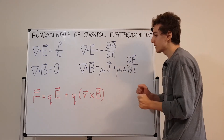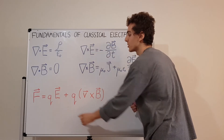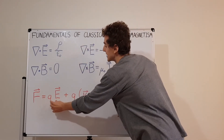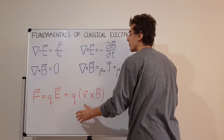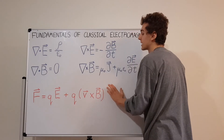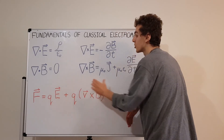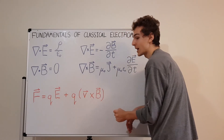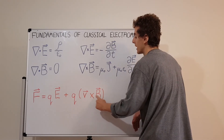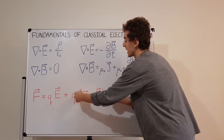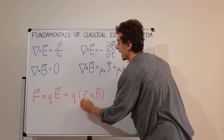The Lorentz force equation tells us how charges respond to these fields. How does a charge respond to an electric field? It's a scalar multiple by the charge giving us the force — this term is called the electric force. The magnetic contribution, called the magnetic force, also scales by the charge, but it's not a simple scalar multiplication — it's a cross product with the velocity and the magnetic field. These form a force vector when scaled by the charge, and the total force is the sum of the electric force and the magnetic force.